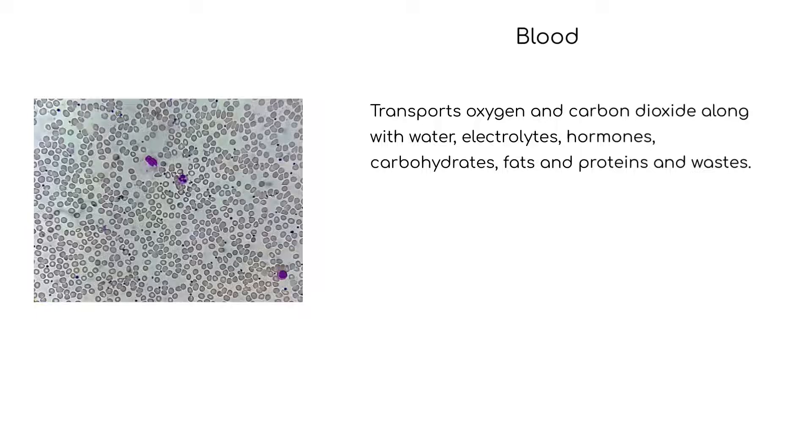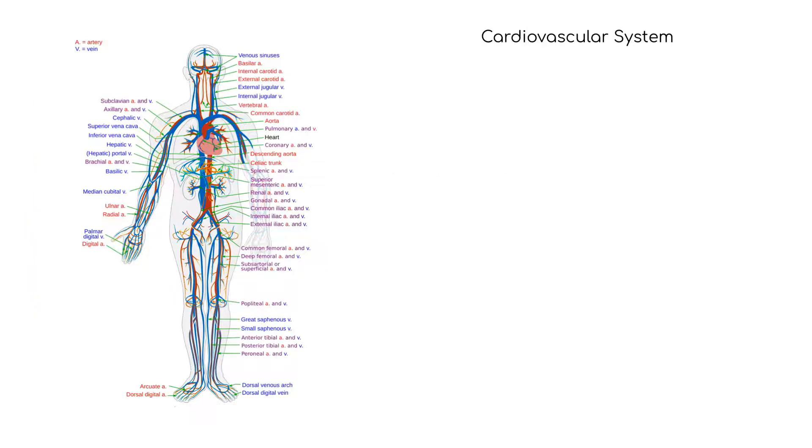The blood is a fluid system that contains cells and plasma. These structures work to transport oxygen and carbon dioxide, along with water, electrolytes, hormones, carbohydrates, fats and proteins, and wastes.